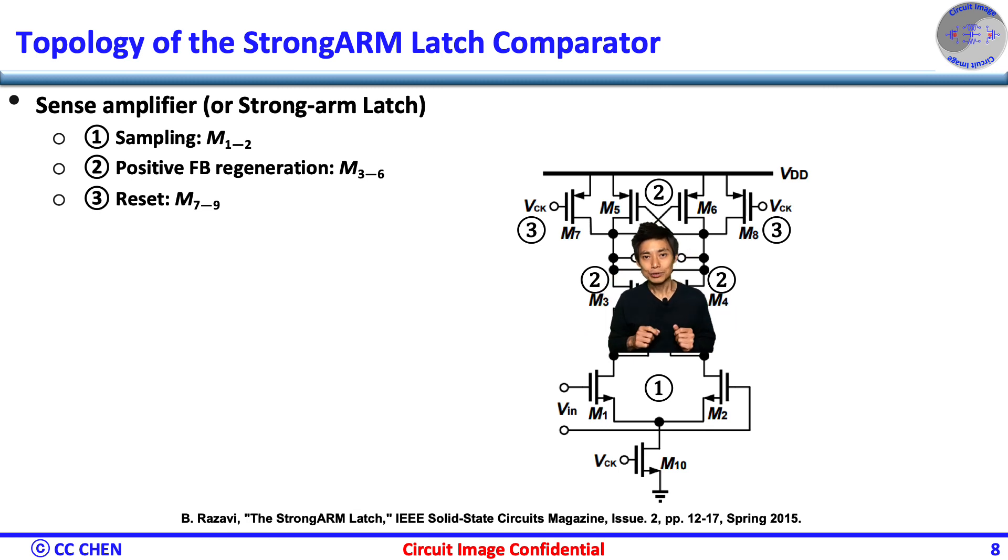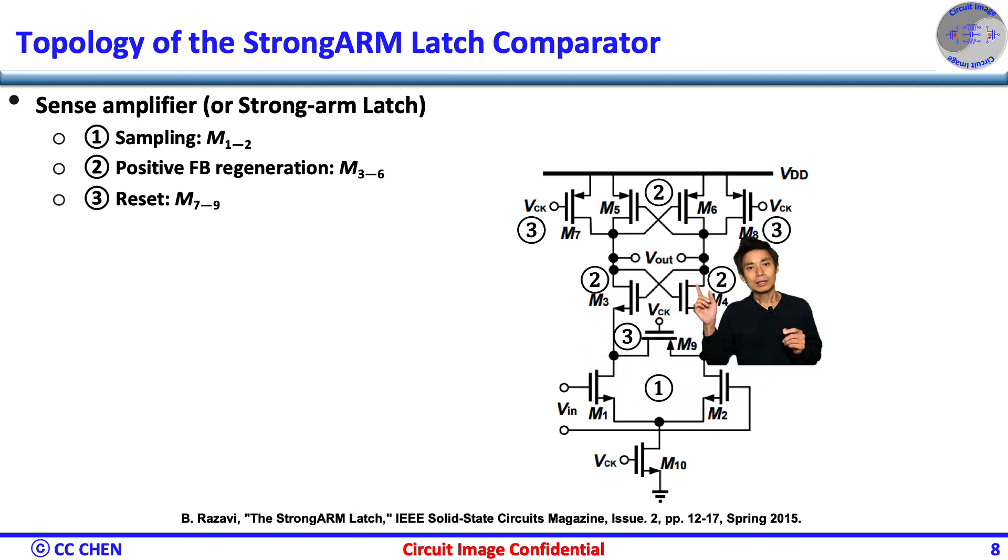After the sensing pair, the latch should enter the regeneration time. Therefore, the cross-coupled inverter M3-M4-M5-M6 should be on top of the differential pair M1-M2, such that the regeneration phase will disable the input sensing and mainly regenerate the output to rail-to-rail levels.